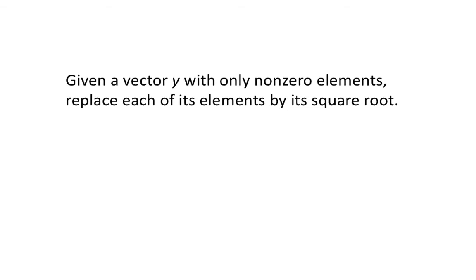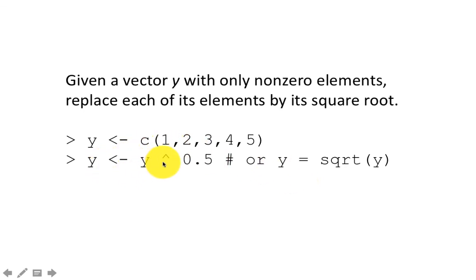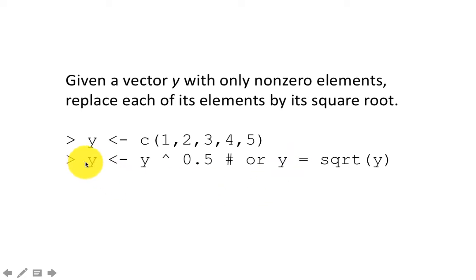Given a vector y with only non-zero elements, replace each of its elements with its square root. We want to replace the values of y — not just find the square roots — which means we have to assign the result back. So: y <- y^0.5, or equivalently y <- sqrt(y). We are computing the value and putting the result back into y. Notice I'm using both the <- and = assignment operators interchangeably — for what we do in this course, the two can be completely interchangeably used.